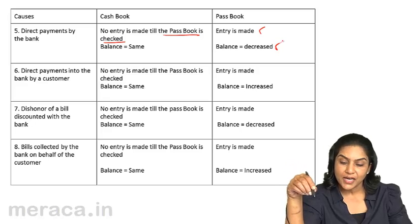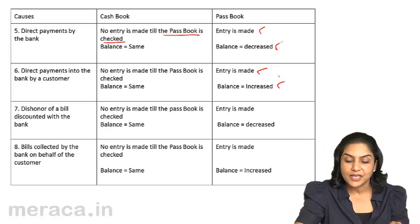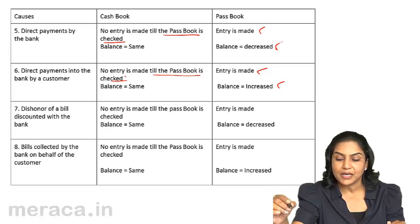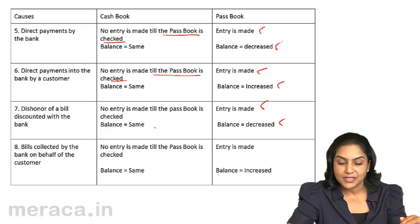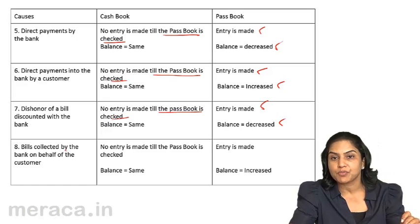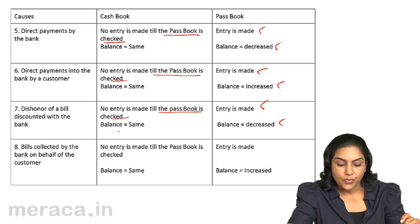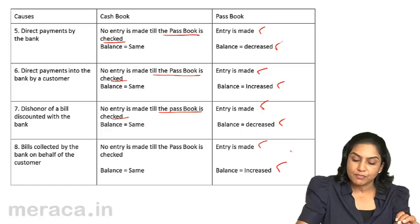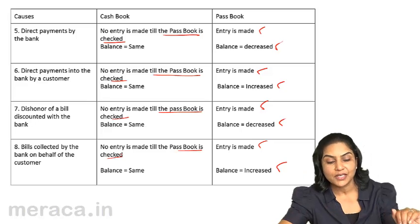When direct payments into the bank are made, entry is made in the passbook immediately and the passbook balance increases, but the cashbook remains the same until the passbook is checked. When there is a dishonour of a bill, the passbook balance comes down immediately but the cashbook balance remains the same. When bills are collected by the bank on behalf of the customer, entry is made in the bank's books immediately and the balance increases, but no entry is made in the cashbook until the passbook is checked.